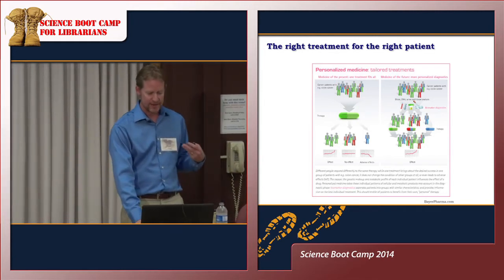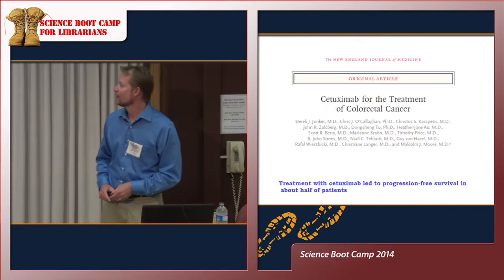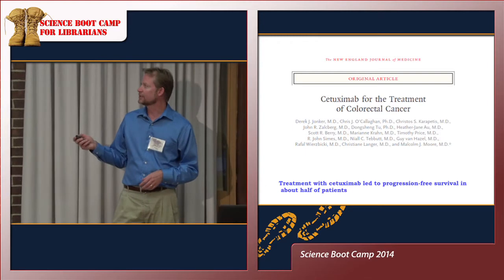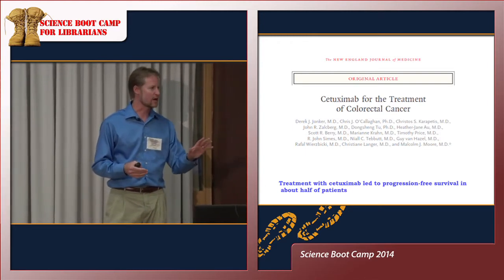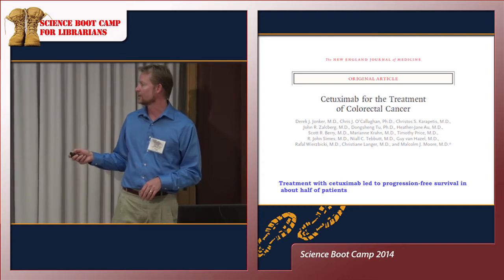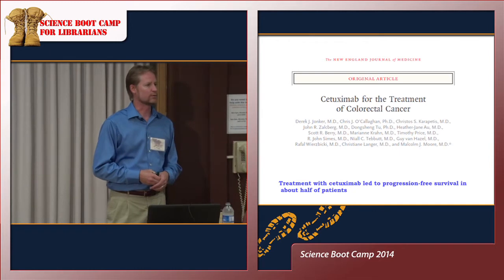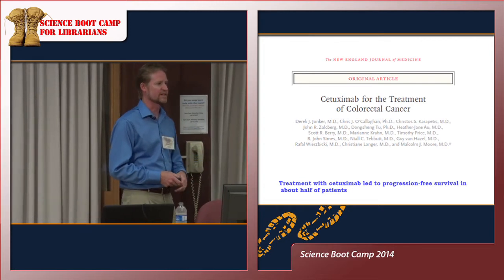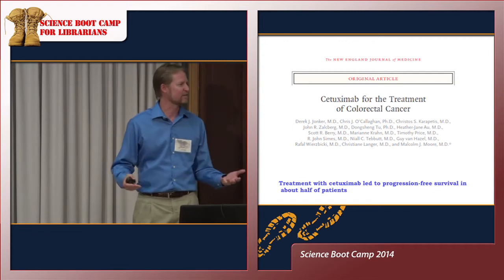I'll give you an example, because some of that is already happening. This is a study from the mid-2000s in the New England Journal of Medicine. They were treating a group of colon cancer patients with a new drug at the time called cetuximab. They treated these patients with this experimental new drug, and they found that a lot of the patients did quite well — it really improved what we call their progression-free survival, meaning they were able to survive without the disease getting any worse. They saw good results in about half of the patients.